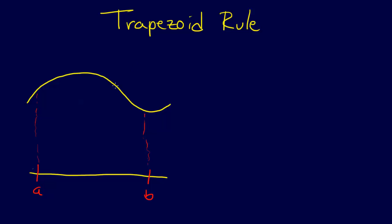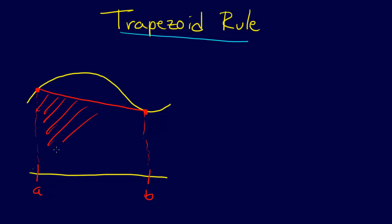We're looking at the three closed Newton-Cotes formulas. The first of these is called the trapezoid rule, and we're going to derive it. We have our function and two points A and B, and we're going to fit a straight line to these two points and integrate under that curve. The way we'll do this is using the Lagrange interpolating polynomial.